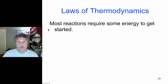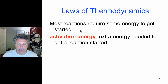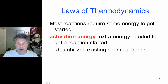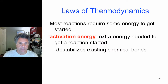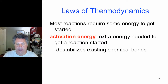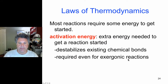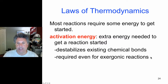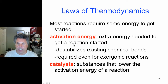Even spontaneous reactions with negative delta G may require activation energy to get started. A little extra energy needs to be put into the system to initiate the reaction, even though the products end up at a lower energy than the reactants. Activation energy can be thought of as destabilizing existing chemical bonds or bringing components into close proximity so that reactions can take place.